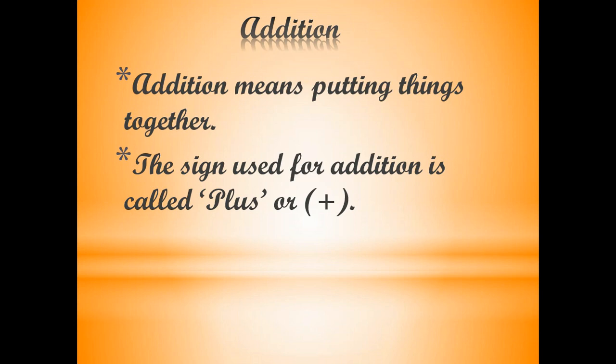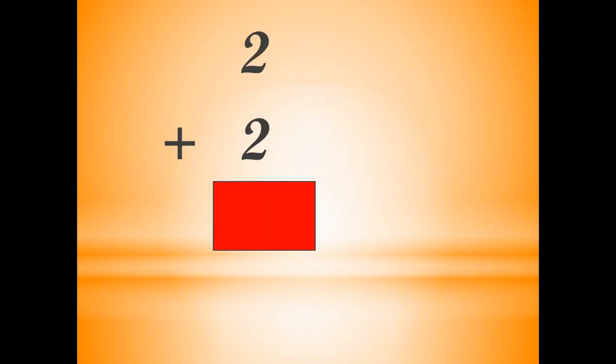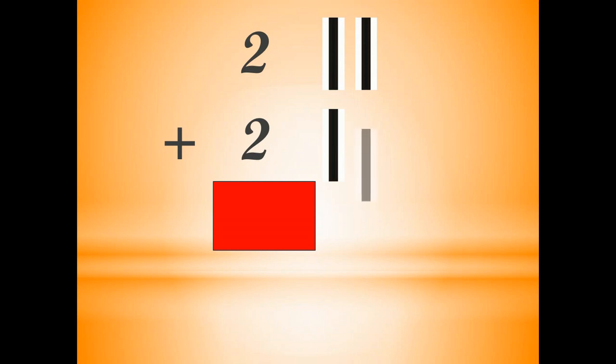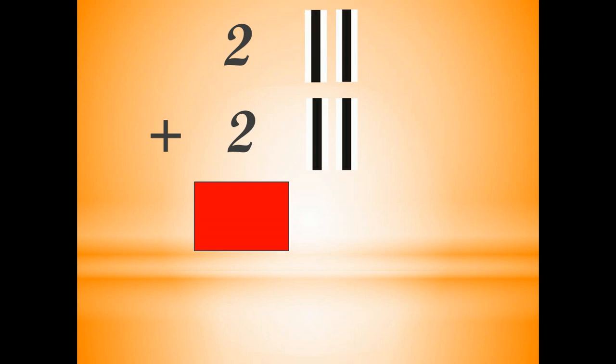So now we will see some examples. You can see it is written 2 plus 2 — tell me the answer. First number is 2, so we will draw two lines: 1, 2. And the next number is also 2, so we will again draw two lines: 1, 2. Now we will count all four lines: 1, 2, 3, 4. So your answer is 4. That means 2 plus 2 is equal to 4.